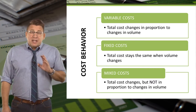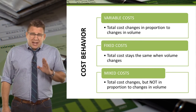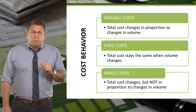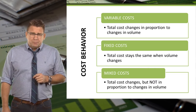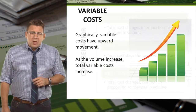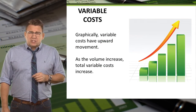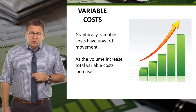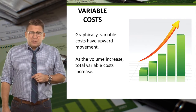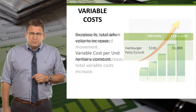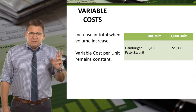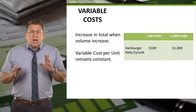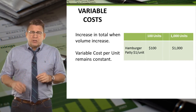Mixed costs increase as volume increases, but not in proportion to the change in volume. This is what a variable cost looks like when it's graphed — the movement is upward as volume increases. However, variable cost is fixed or constant per unit.